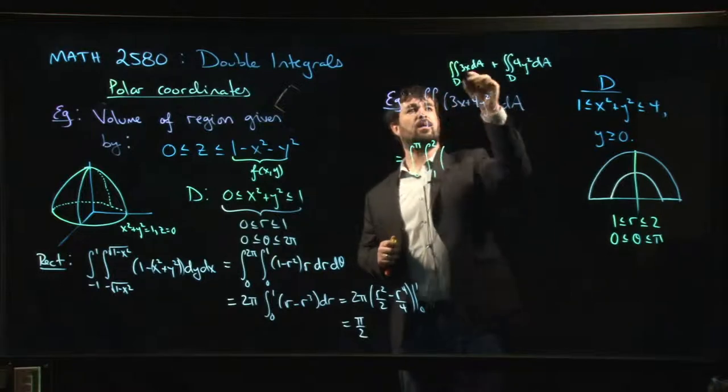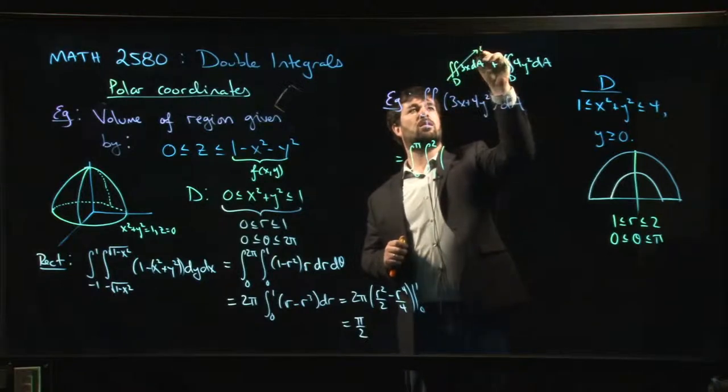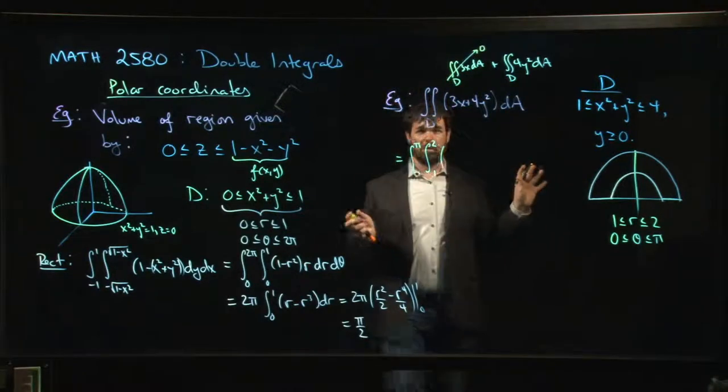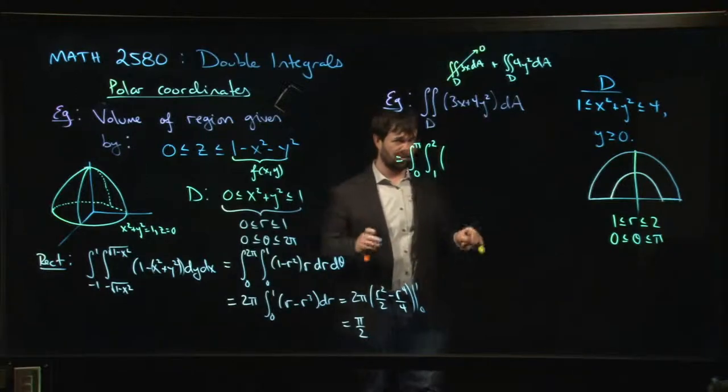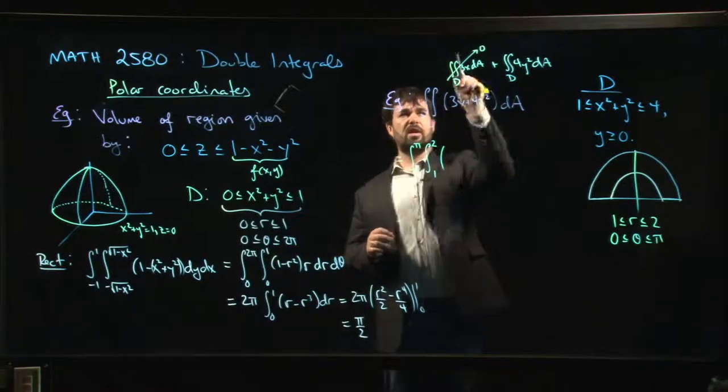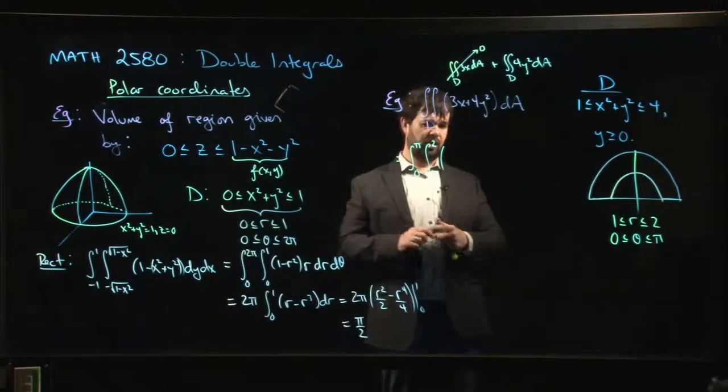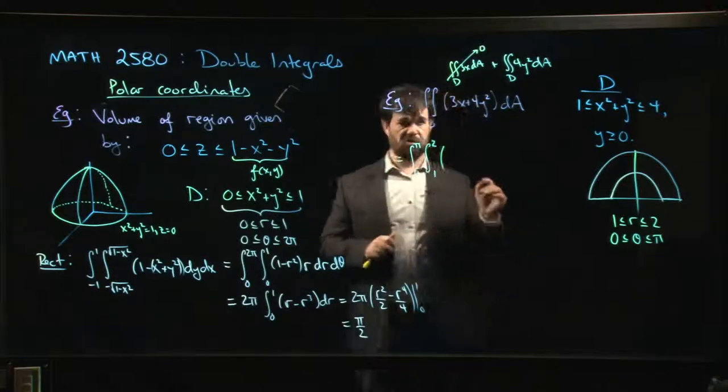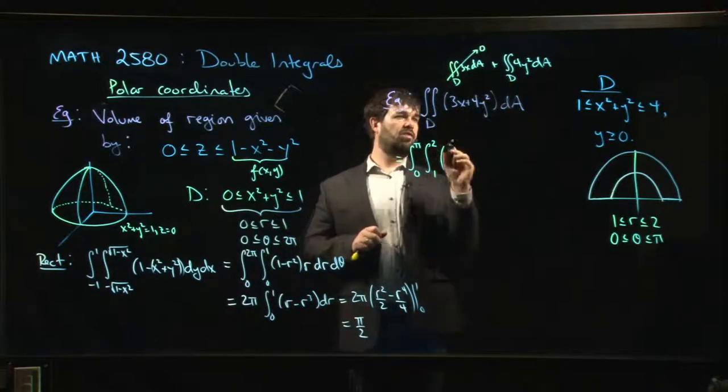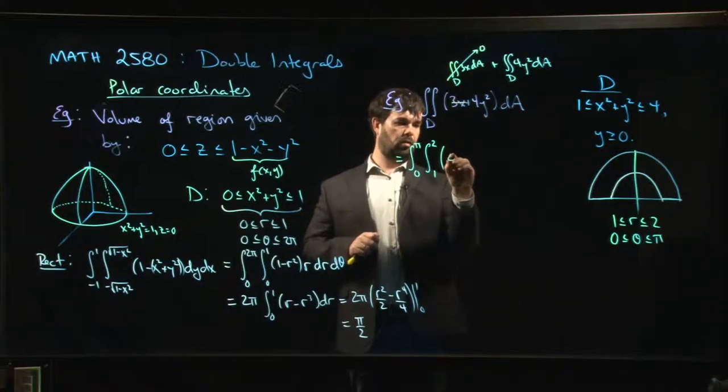So you're going to get equal and opposite contributions from either half of the region for this function. That's going to cancel out. So we know that that integral is going to be 0 before we even bother converting to polar coordinates. Throw it in if you like. Check. Make sure this works out. Put in a 3 r cos theta. You'll see it works out. You don't have to take my word for it. You can check yourself. But let's just deal then with the 4 y squared.